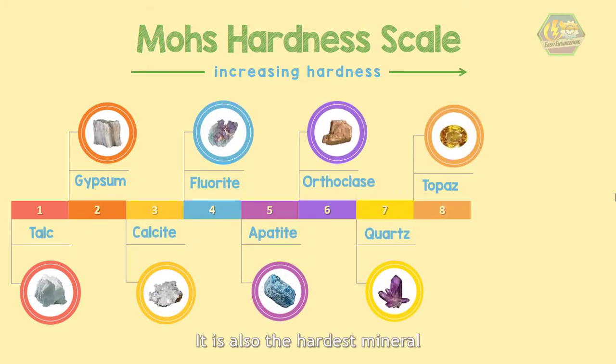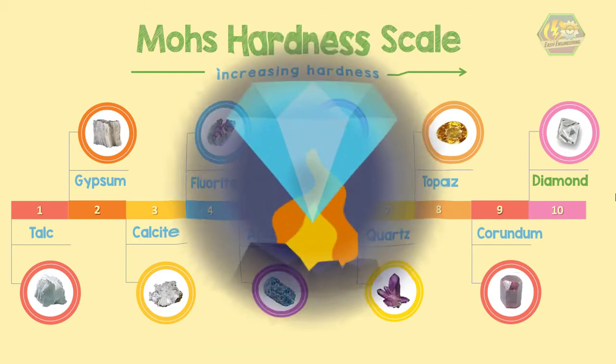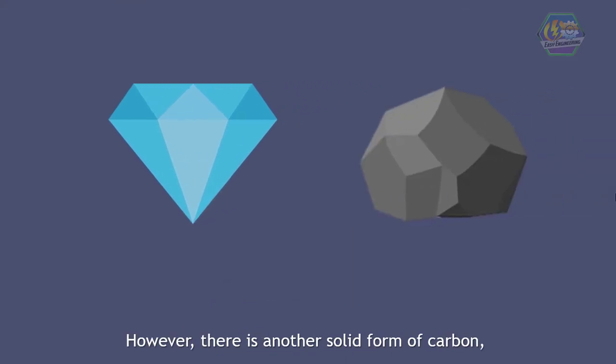It is also the hardest and has the highest thermal conductivity than any other mineral, and it could resist melting up to 5,000 degrees Celsius. However, there is another solid form of carbon: graphite.